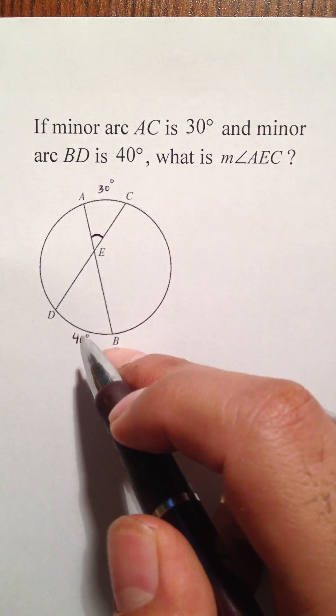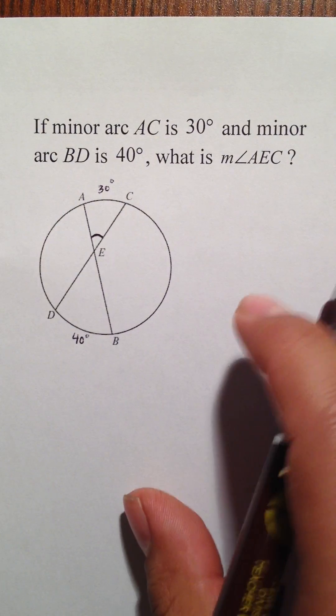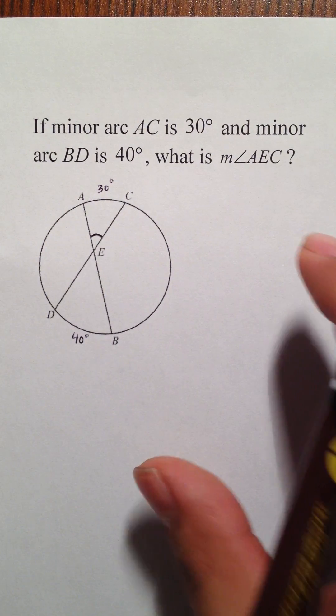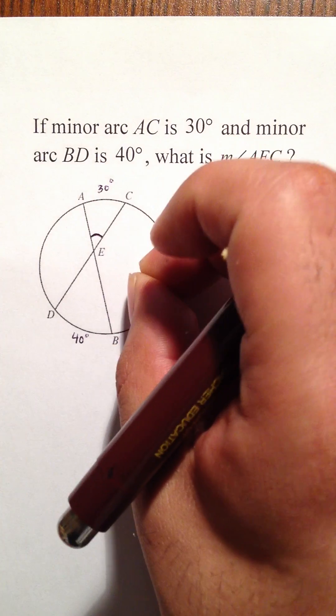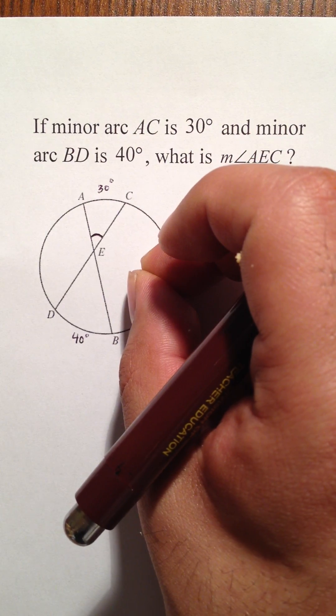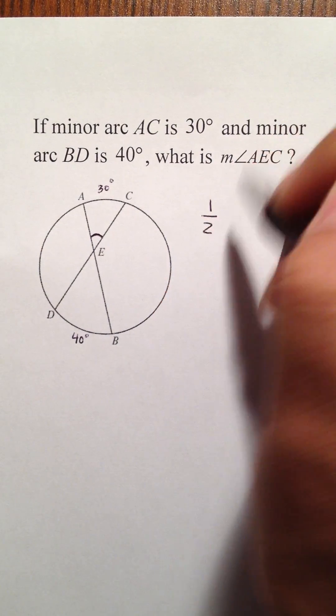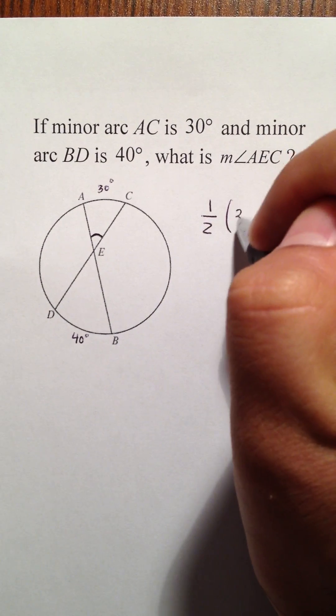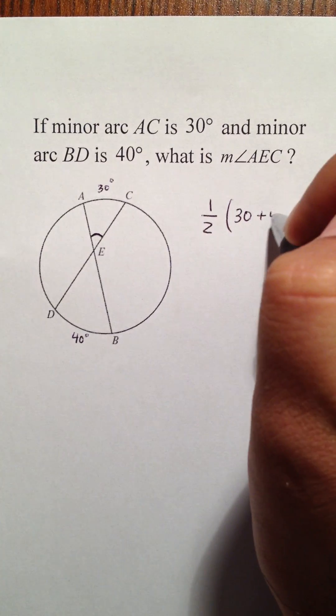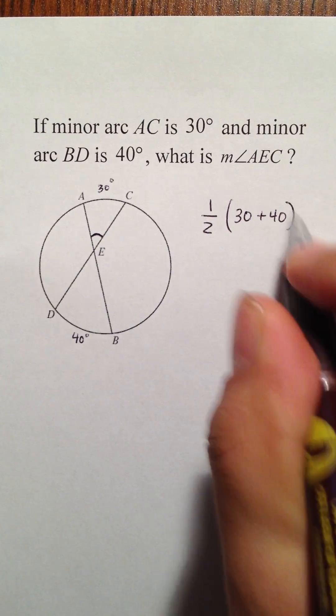And that's only the information necessary for you to solve this. What happens is because it's an inside angle of a circle, what you're going to be doing is you're going to take this 30 degrees, add it to this 40 degrees, and then cut it in half.